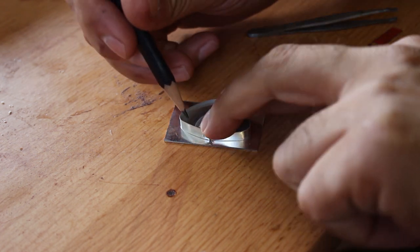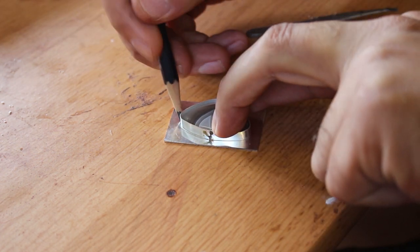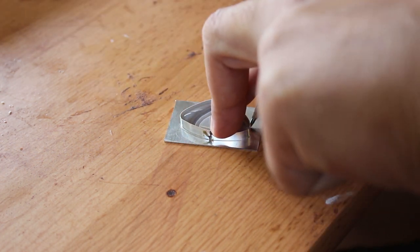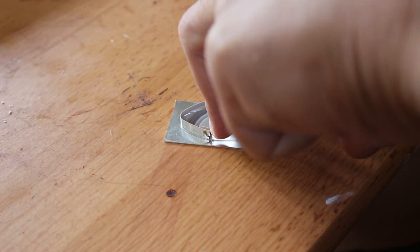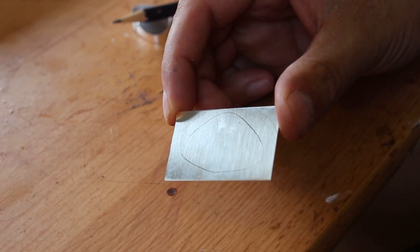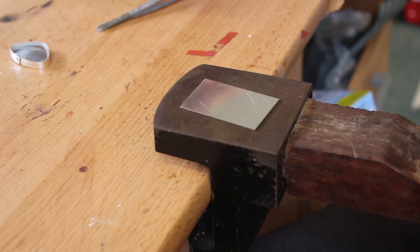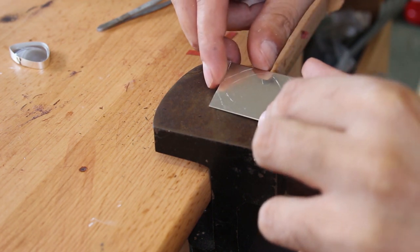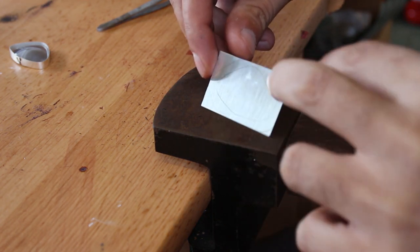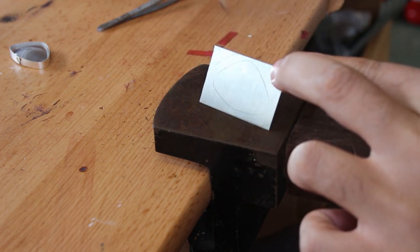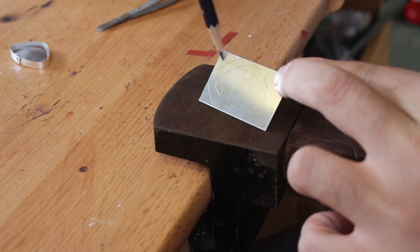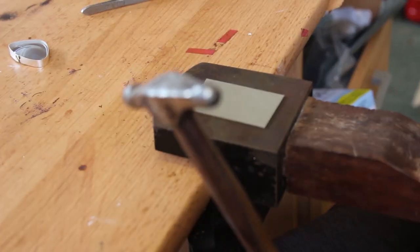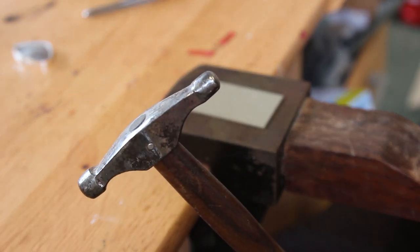Then I marked around the stone with a pencil so I could see on the sheet sort of where that stone would sit. I don't know if you can see that properly. And then I decided that the piece would be textured, so I drew around that bezel setting so I could texture the sheet before soldering the bezel on to the sheet. Does that make sense?